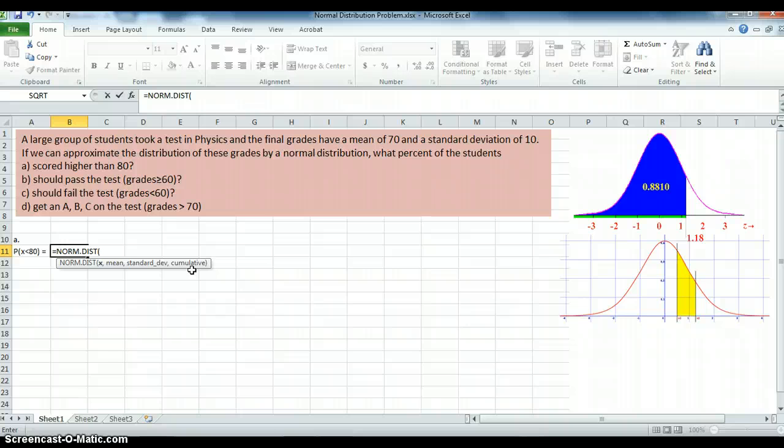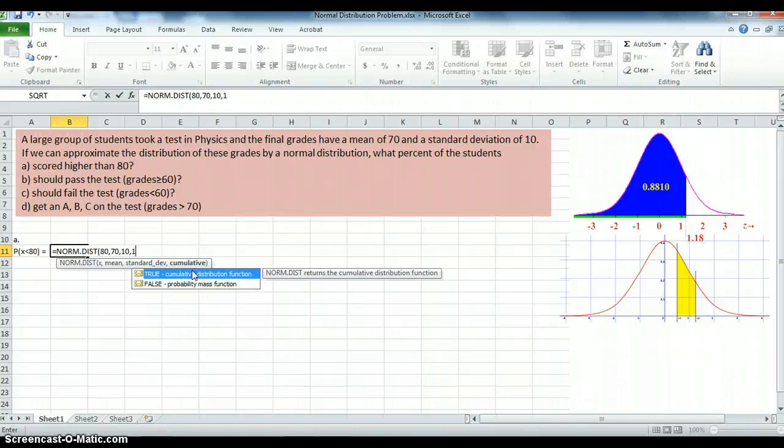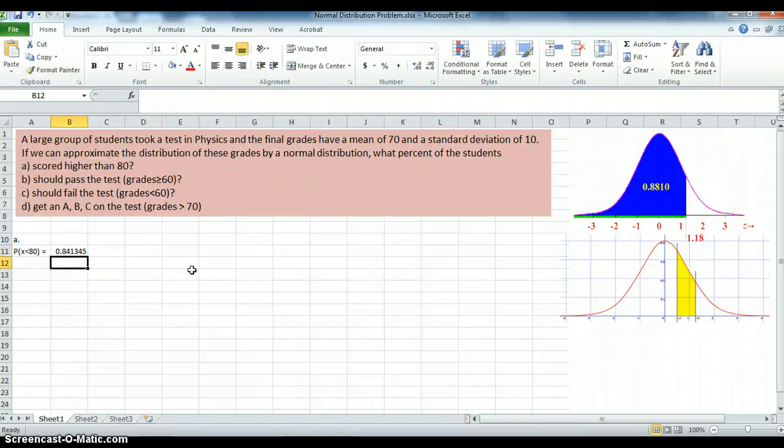So what do we get here? X is 80, the mean is 70, the standard deviation is 10, and we want a cumulative distribution. So we get 0.841345.